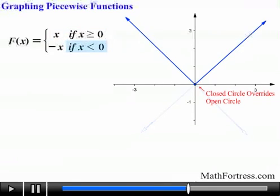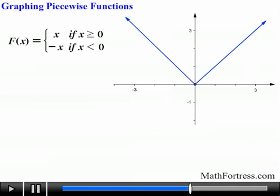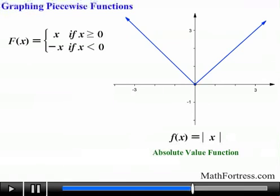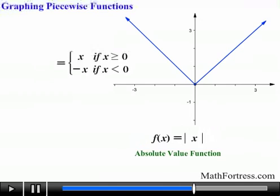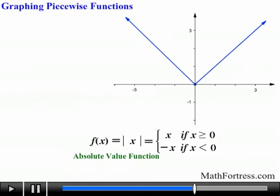And there you have it — this is how the piecewise defined function looks. It's not that hard; it just looks intimidating. Notice this graph is actually the absolute value function f(x) = |x|. This is exactly how the absolute value function is defined — it is a piecewise defined function in disguise. We use the absolute value symbol for convenience, but this is its true definition.